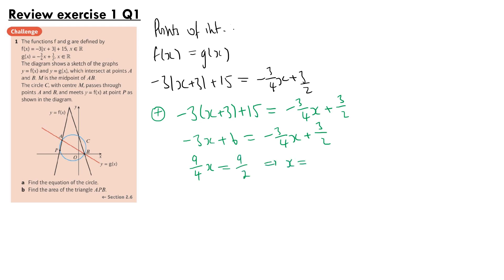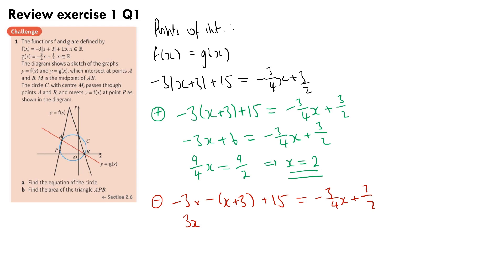Therefore x equals 2. For the negative value of x plus 3, we have minus 3 times negative (x plus 3) plus 15 equals minus 3 quarters x plus 3 halves. Expanding gives 3x plus 9 plus 15, so plus 24, equals minus 3 quarters x plus 3 halves. Rearranging gives 15 quarters x equals 3 halves minus 24, so minus 45 over 2, therefore x equals minus 6.